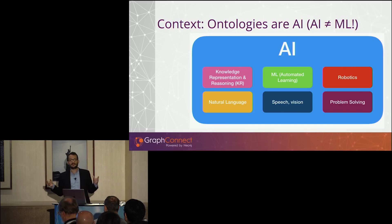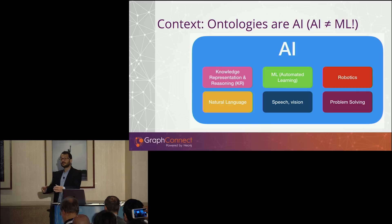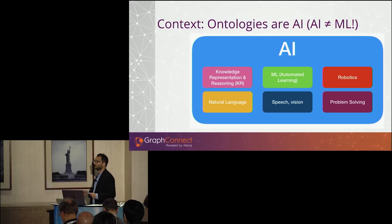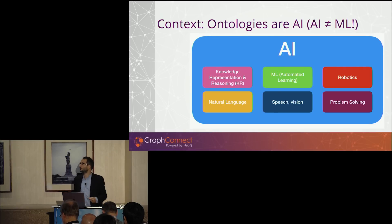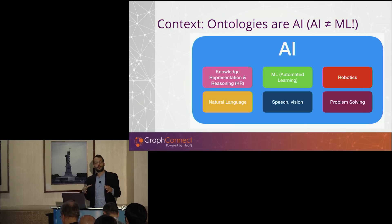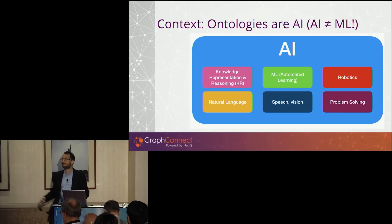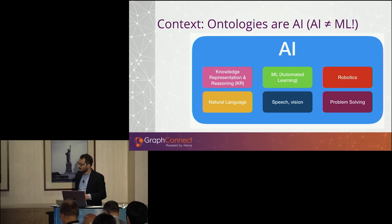One of the problems with machine learning is we can have a neural network that produces a fantastic model that can tell if a picture is a biscuit or a dog, but we can't explain why. It just works — so there's this black box problem. At the other end of the spectrum in the AI umbrella is knowledge representation, where we try to make our reasoning explicit, explain what we know and how we run these inferences. It's what we call more explainable AI. That's where ontologies fit.